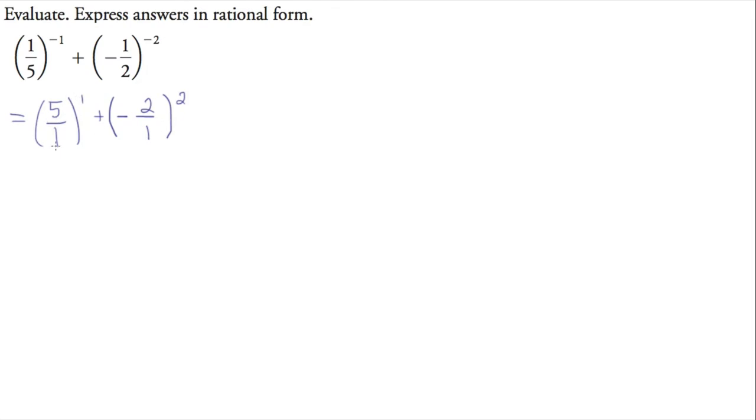Well what do we know about five over one? Well five over one is the whole number five. Really simple. And what do we know about this fraction to this power? What this means is that anything inside the bracket is now to the power of two. And what's interesting about that is it also affects the negative.